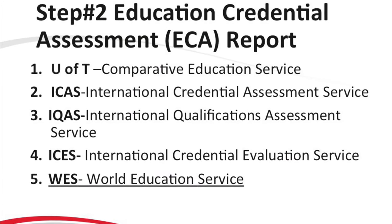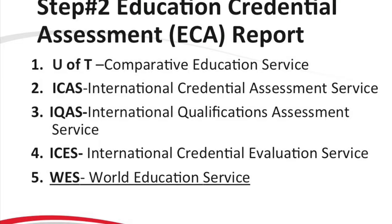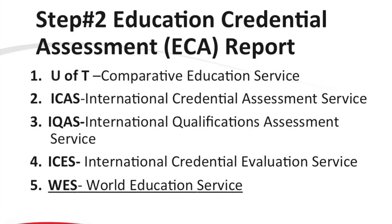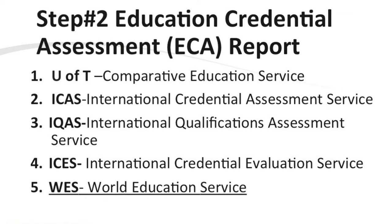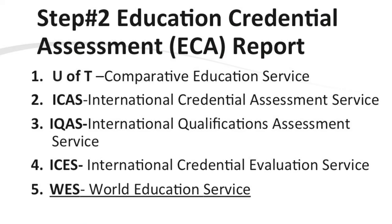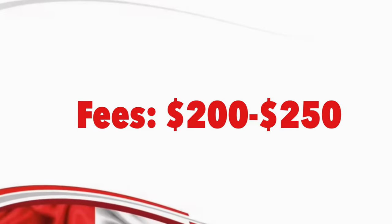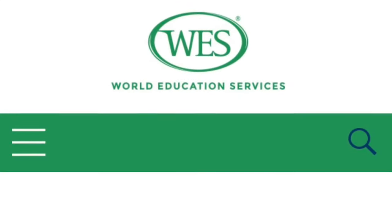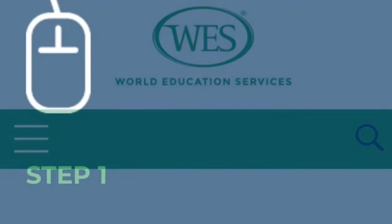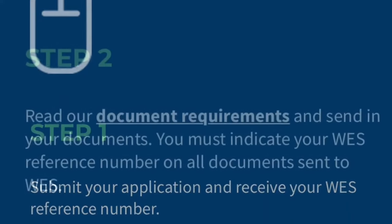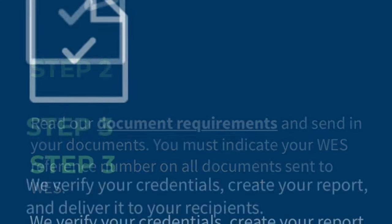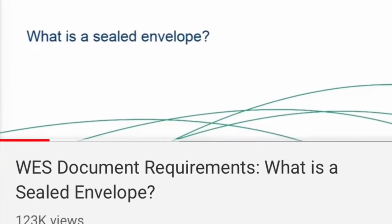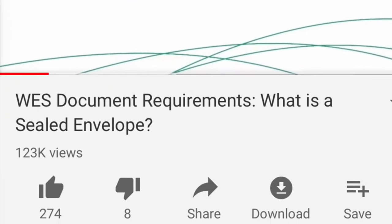In the meantime, get your academic documents evaluated by one of the approved organizations, because you will need this assessment report to make your Express Entry profile. They need this report to ensure your degrees and certificates are valid and equivalent to Canadian ones. The fees range from $200 to $250 and the processing time is one to four months. I recommend getting it done from WES because it has the shortest processing time. Documents to be assessed must be in an official sealed envelope from your university or institute.